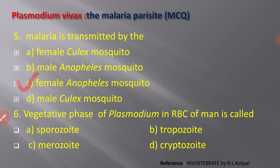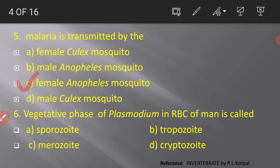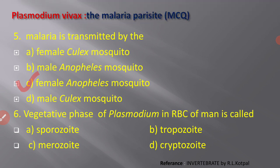Next MCQ: the vegetative phase of Plasmodium in the RBC of man — the multi-nucleate phase which can ingest food material — is called: A) sporozoite, B) trophozoite, C) merozoite, D) cryptozoite. This particular stage is called trophozoite, so option B is the correct answer.